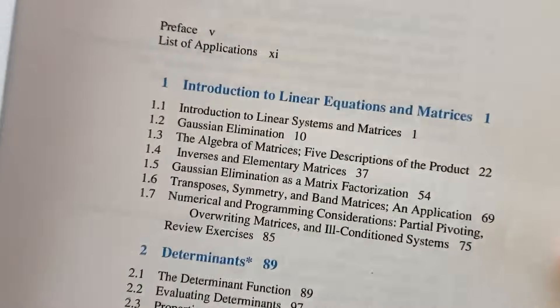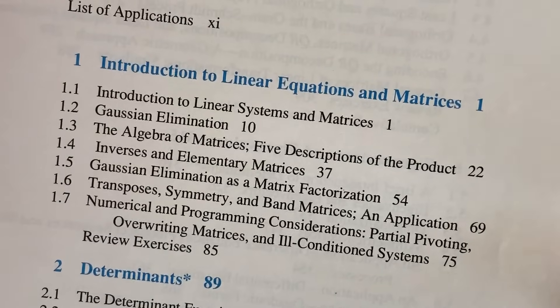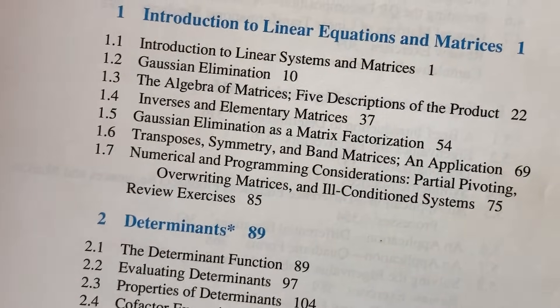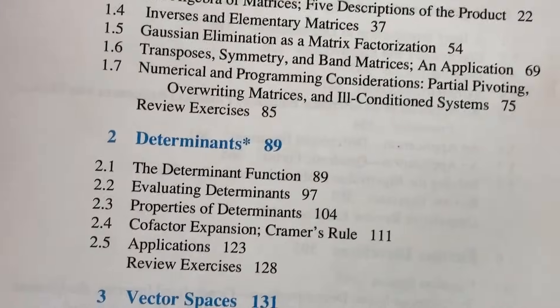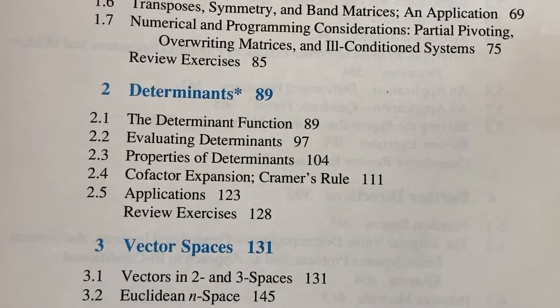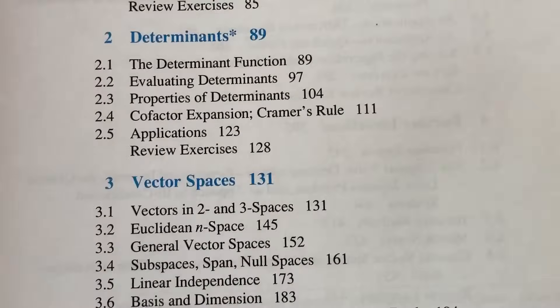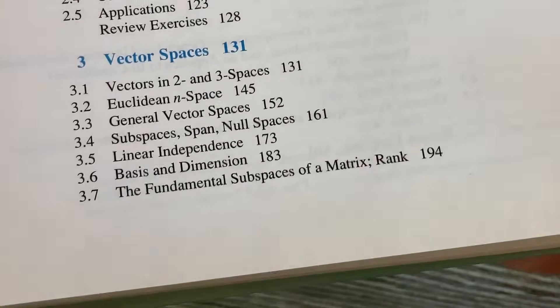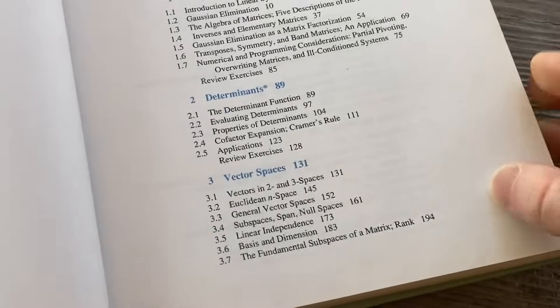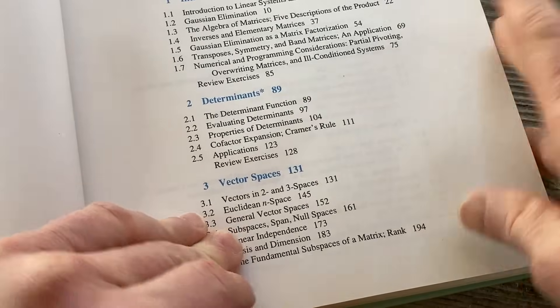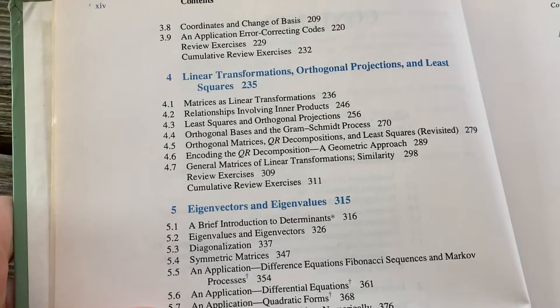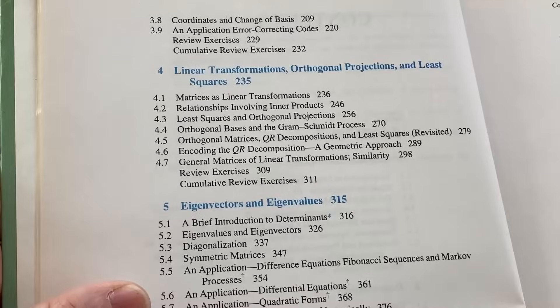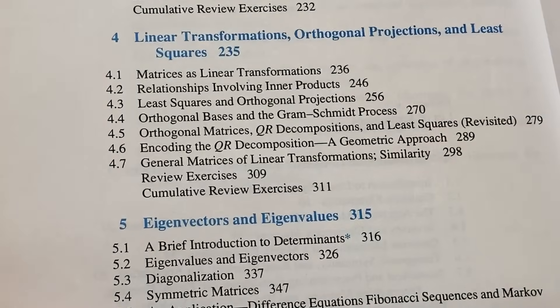So chapter one is on introduction to linear equations and matrices. Chapter two is on determinants. So very computational stuff, right? Nothing really crazy. Three is vector spaces. So here you get some proofs and stuff, but you can still do computational things with vector spaces. You don't have to be a proof writing master. You can still learn linear algebra, but to learn, you know, to understand the proofs, then yes, you do need to know proofs.